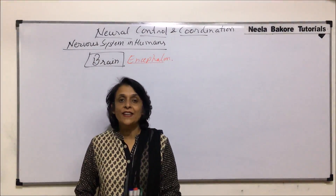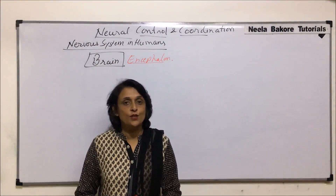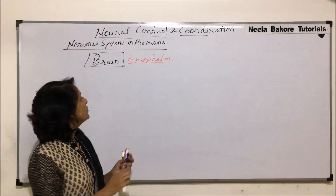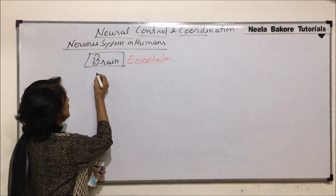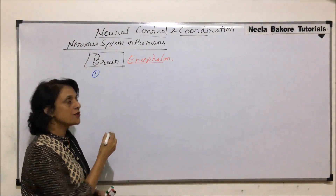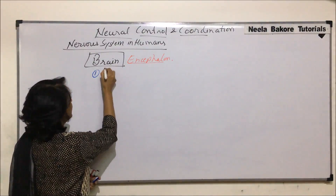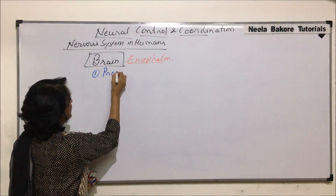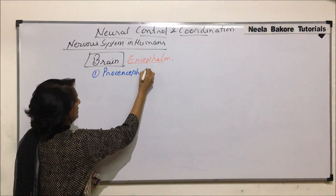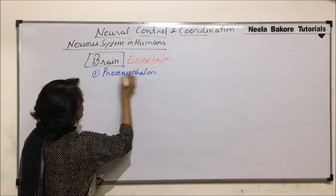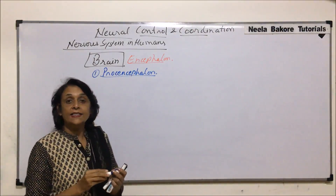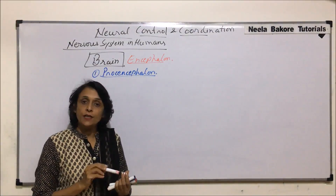We have seen various divisions of the brain. Now we will take up individual parts, starting with the first part — prosencephalon, which means the forebrain.